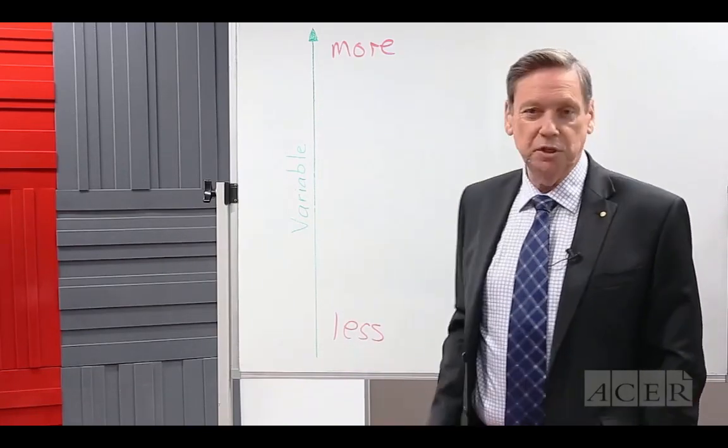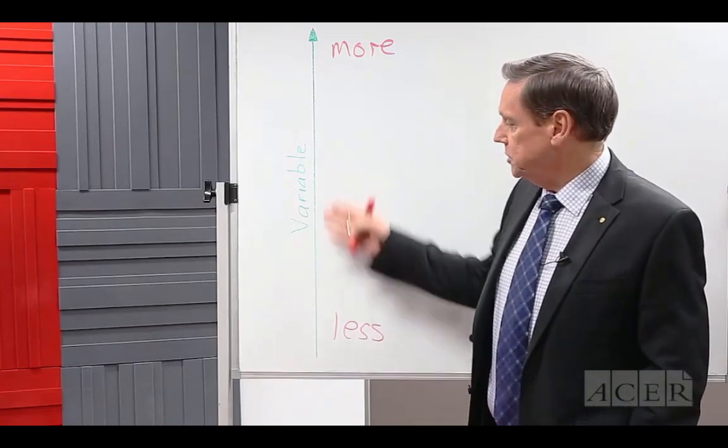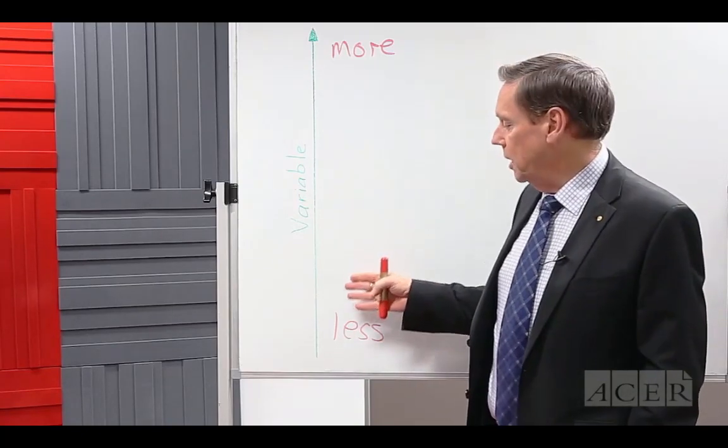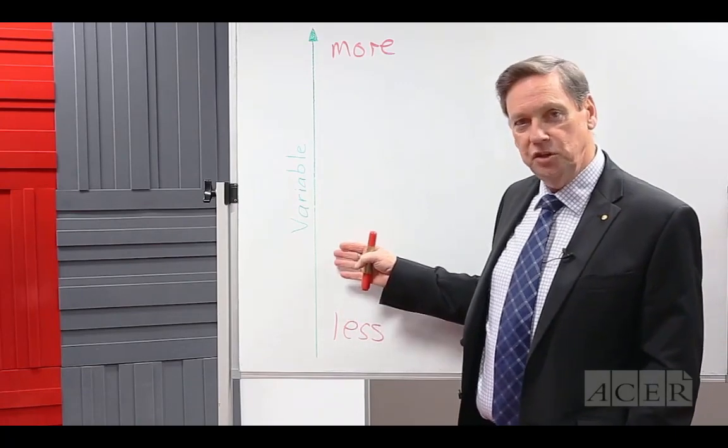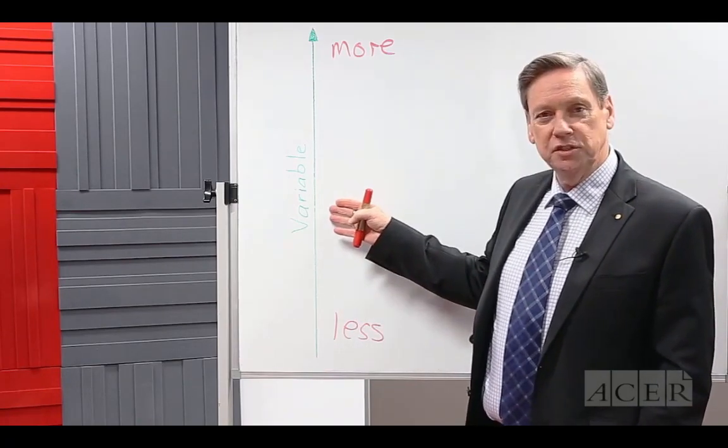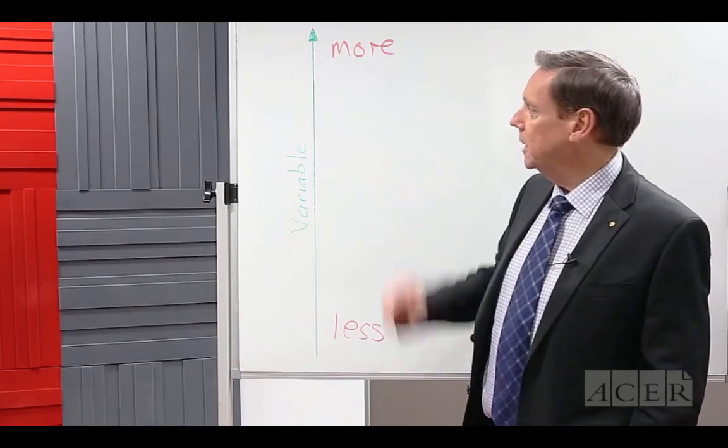So the starting point in any measurement is the idea of a variable. People sometimes call this a continuum as well, and what they mean by that is that it's continuous, it increases in increments gradually in small amounts.